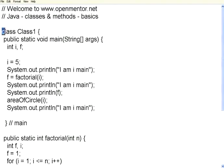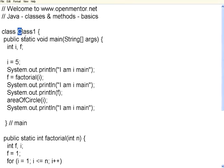There is a class declaration. First the keyword class, then the class name. The convention is that the first letter of every word in the class name will be in capital letters. That's the convention — it is not a must, but people typically write class names with capital first letters for every word.